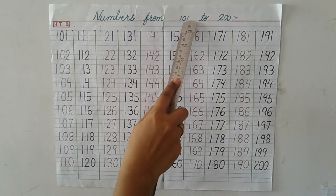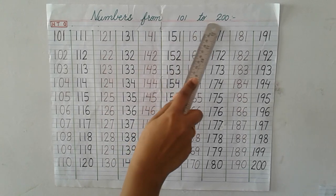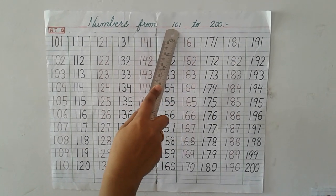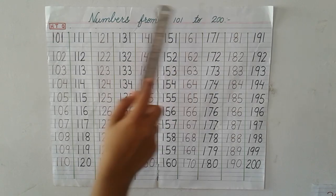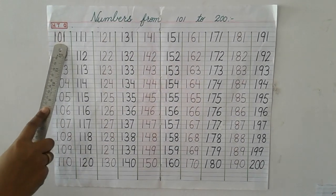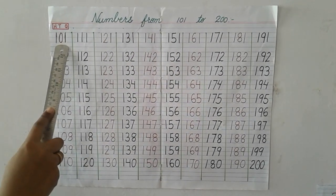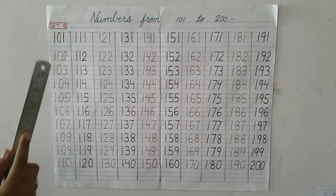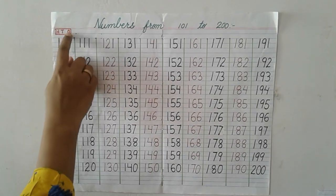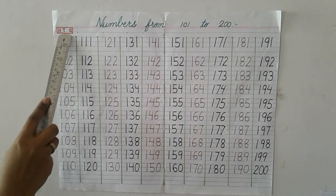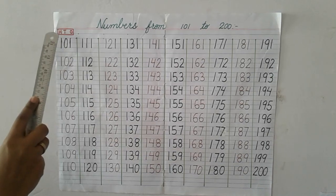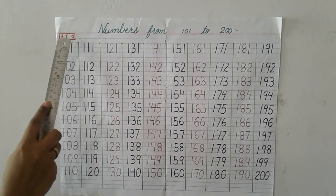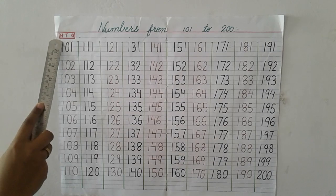Numbers from 101 to 200. Student, we have ones place, tens place, and hundreds place. We call it 1's place, 10's place, 100's place.